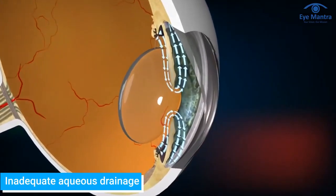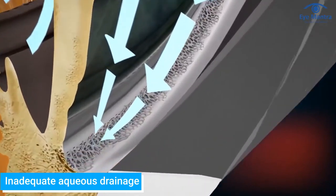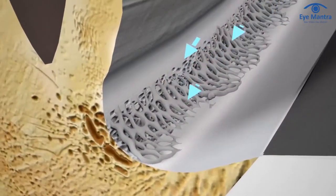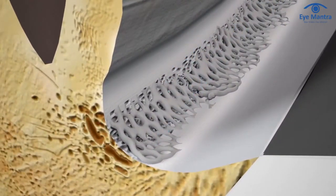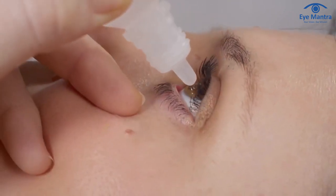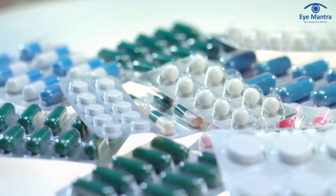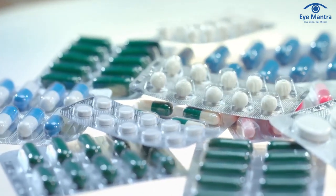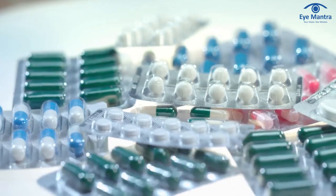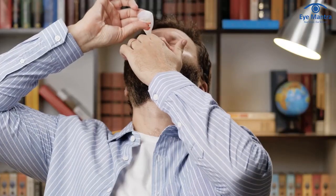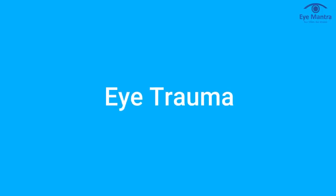Another cause is inadequate aqueous drainage. High eye pressure can also occur if the aqueous is produced at a normal rate but drains too slowly from the eye. Certain medications can also have the side effect of causing ocular hypertension. Steroid medicines used to treat asthma and other conditions have been shown to increase the risk for high eye pressure. Be sure to tell your eye doctor if you are using steroid eye drops for any reason. An injury to the eye is another thing that can affect the balance of aqueous production and drainage, possibly leading to ocular hypertension.